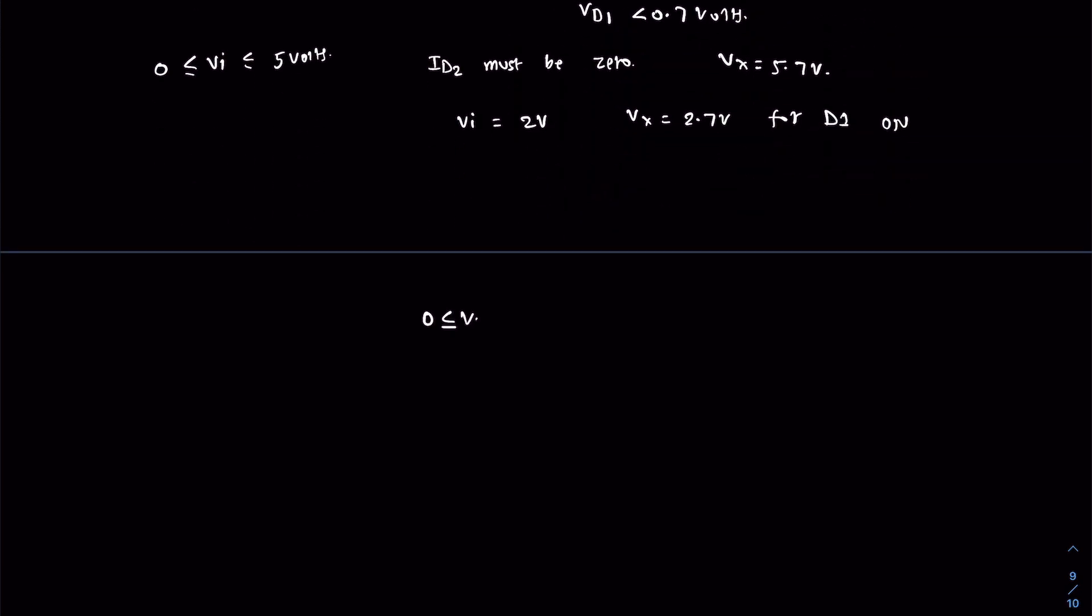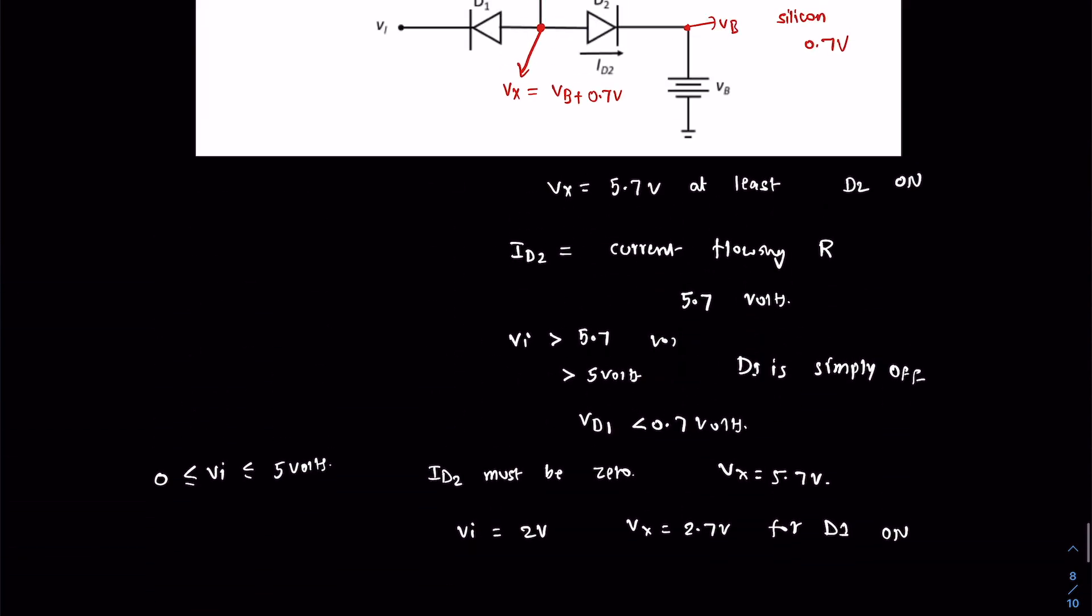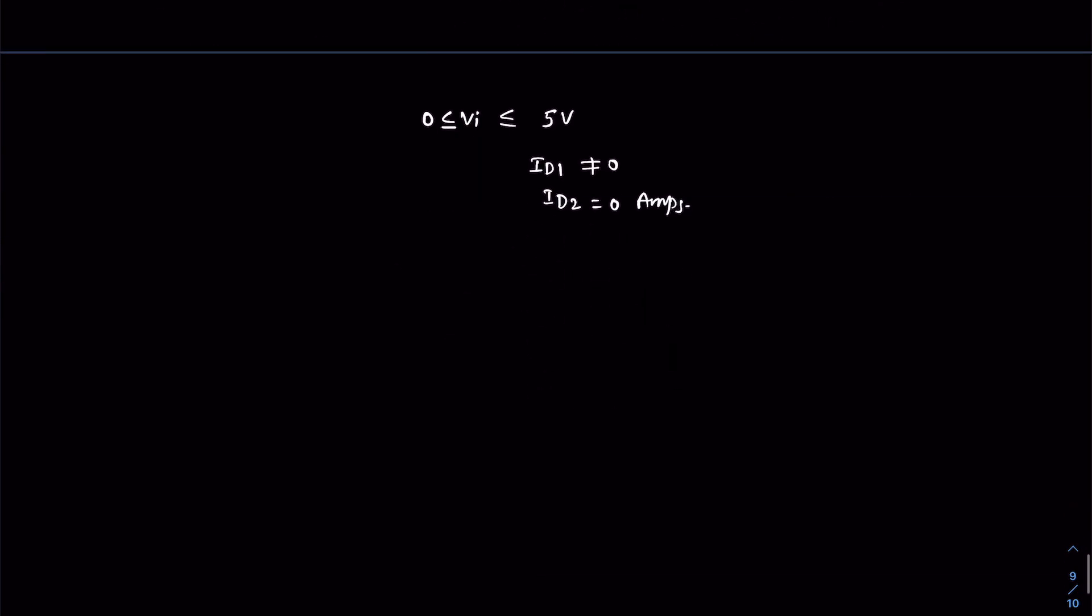In this case it is evident: for 0 less than input voltage less than 5 volts, ID1 is non-zero but ID2 is 0 amps because it is in reverse biased conditions.